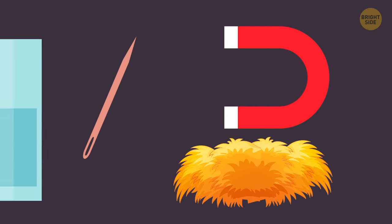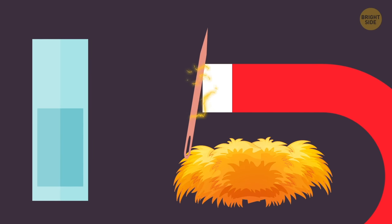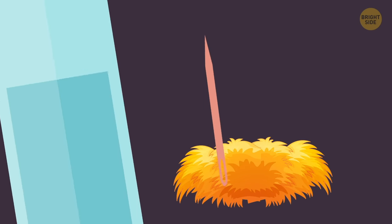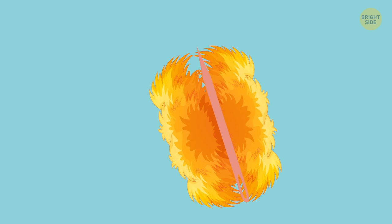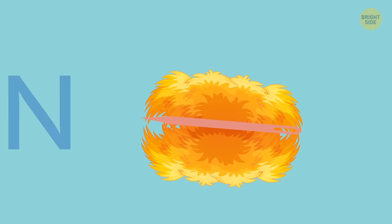You need a magnet, a needle, something floaty like foam or straw, and a glass of water. Magnetize a needle by rubbing it against a magnet, then put two pieces of floaty stuff you have on both sides of the needle. Let it float in the water, and it will eventually stop in one direction. Just like a compass, it will point to the north.